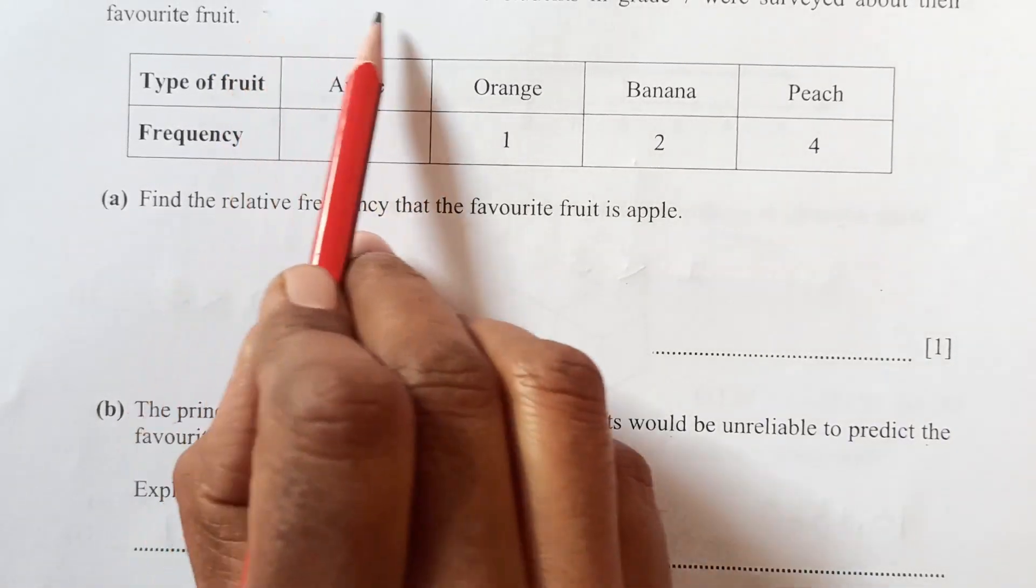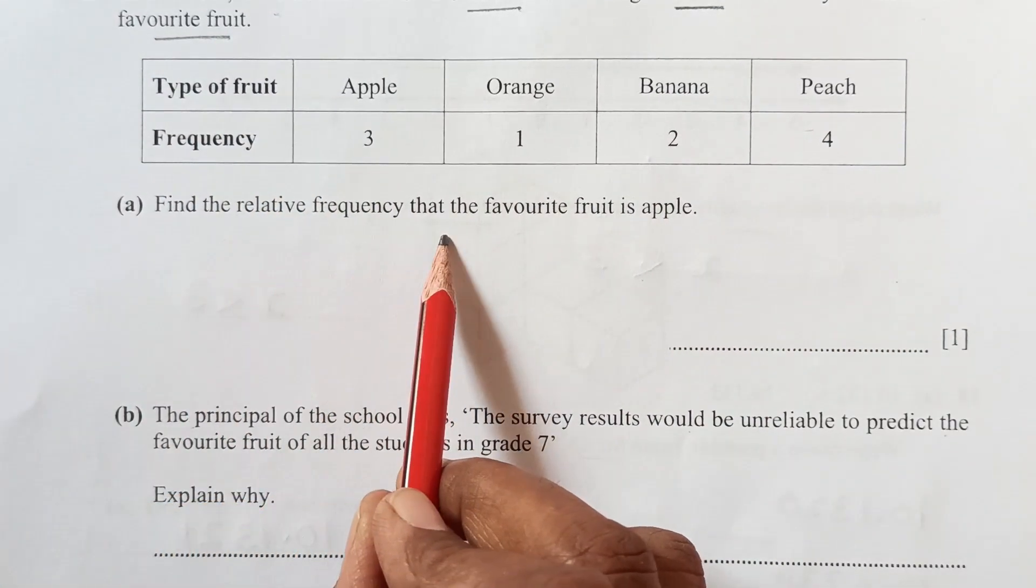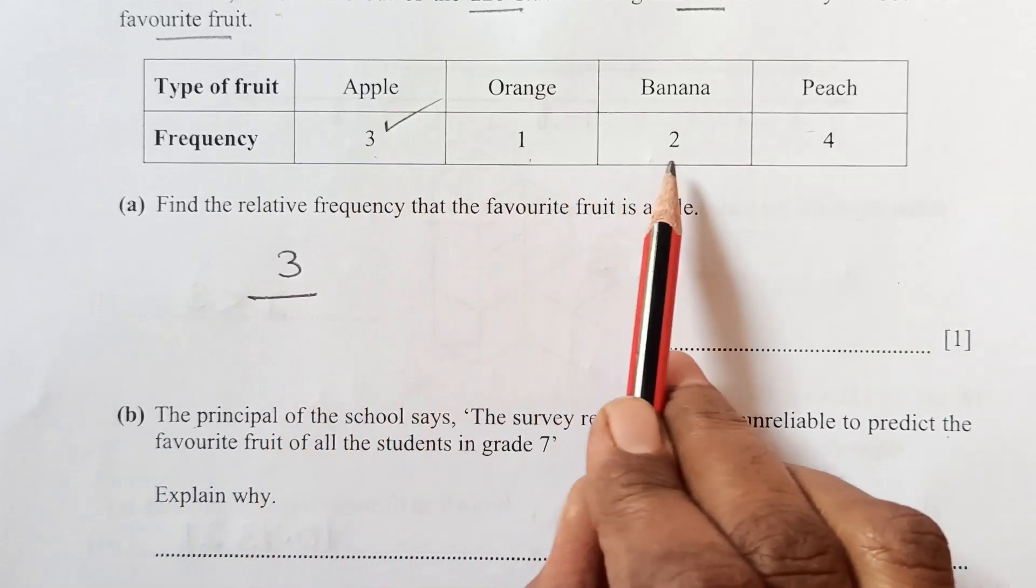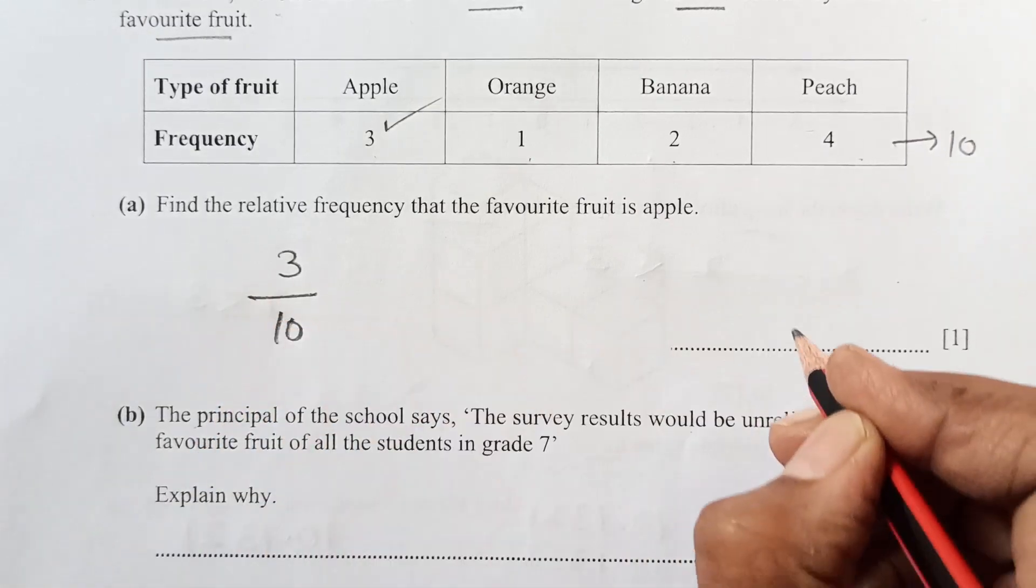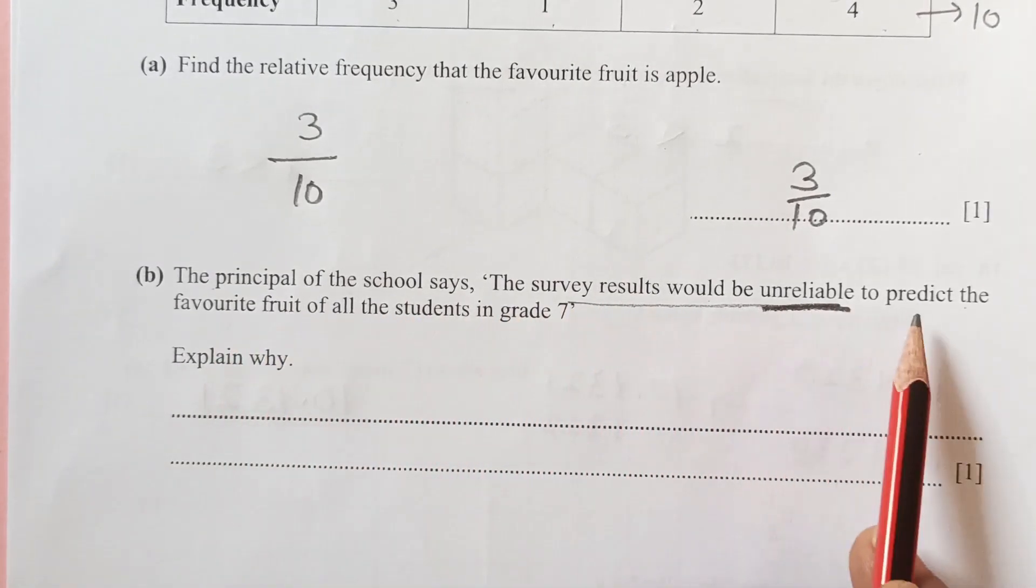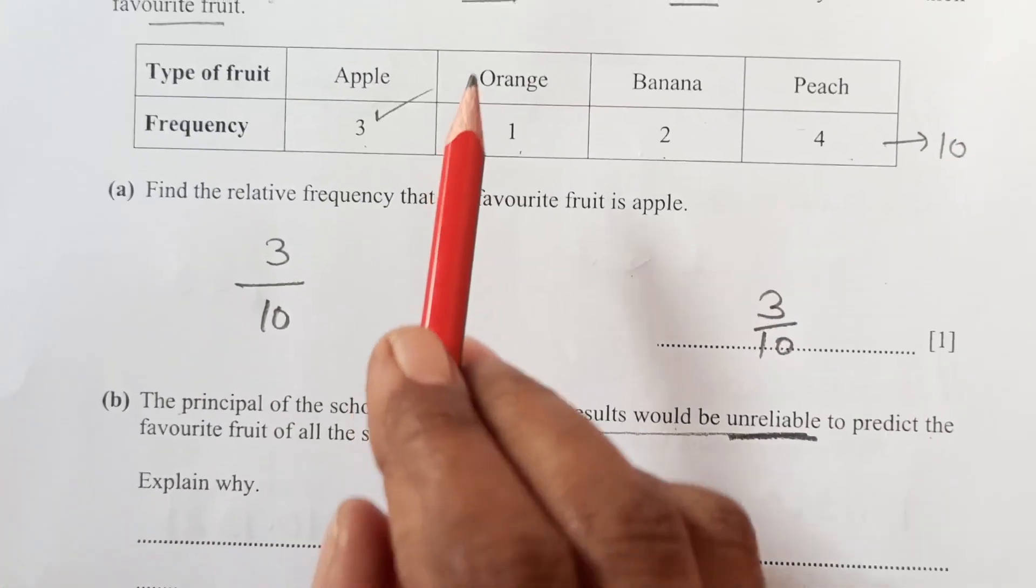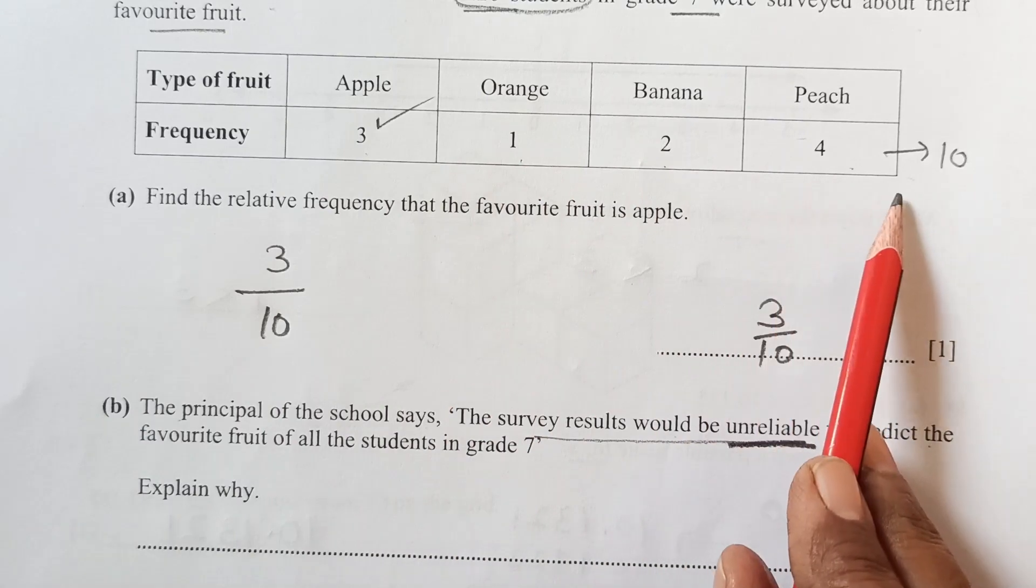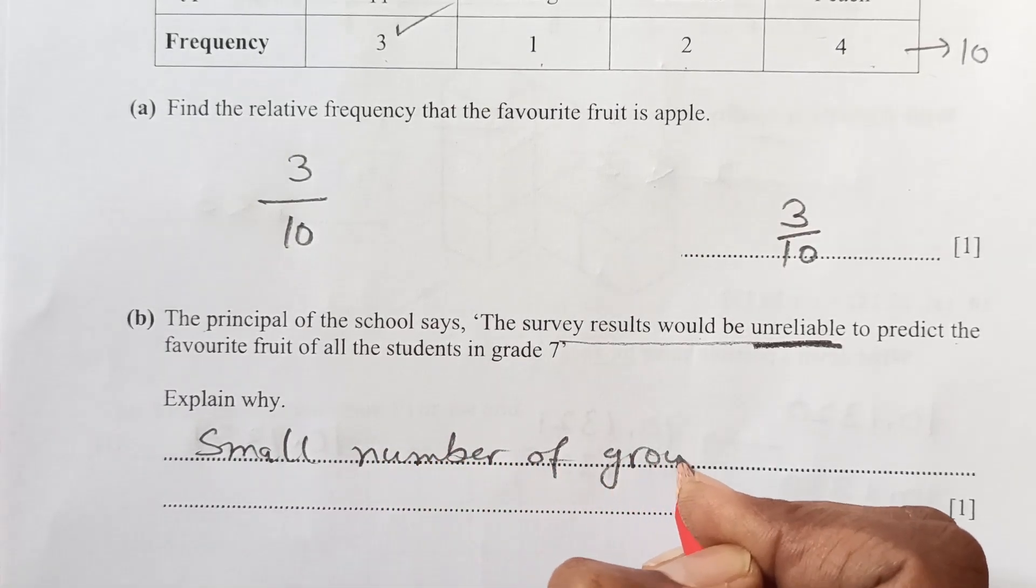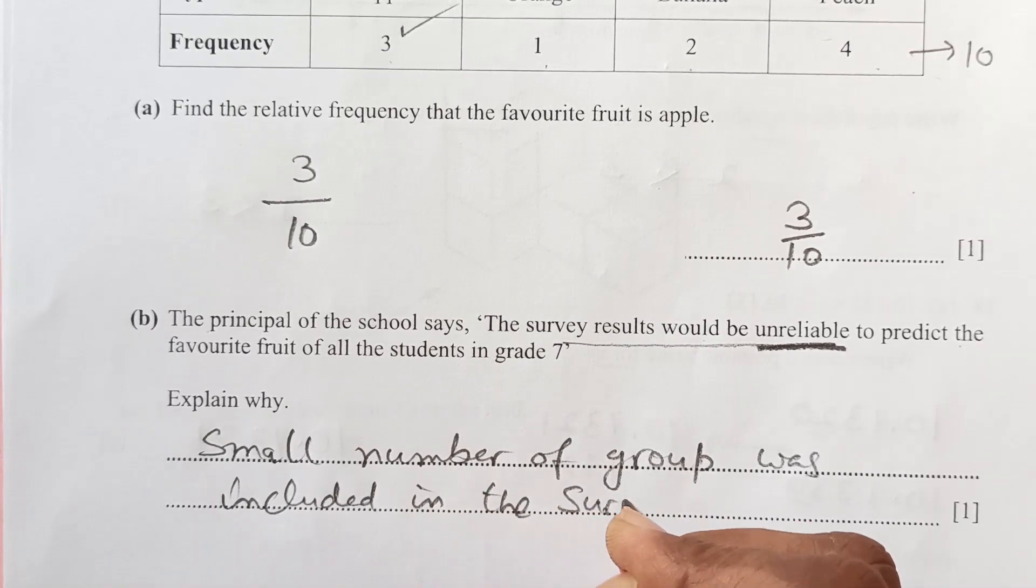Question 19. In a school, 10 students out of 220 in grade 7 were surveyed about their favorite fruit. Find the relative frequency that the favorite fruit is an apple. Apple is 3. Out of how many? 3 plus 1, 4, 6 plus 4, it is 10. Total is 10. So answer is going to be 3 over 10. Now, the principle of the school says the survey results would be unreliable to predict the favorite fruit of all the students in grade 7. Explain why. You see, there are 220 students and only 10 was asked. That means a small number of group was included in the survey. So we can't rely upon it.